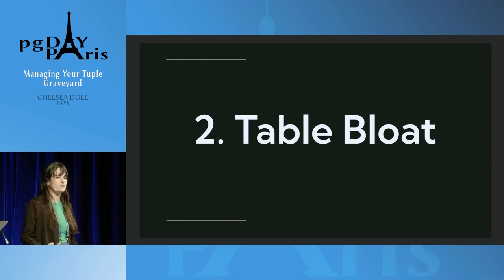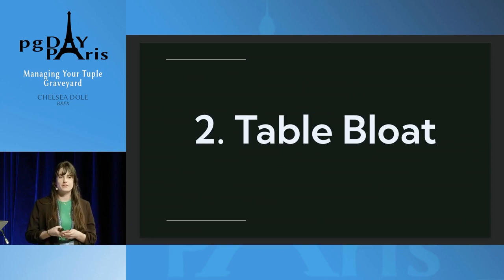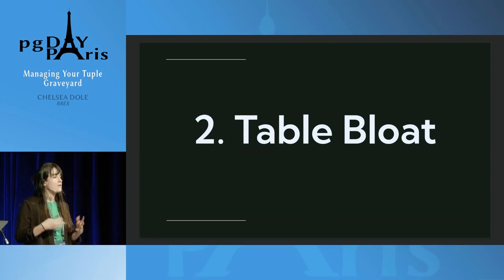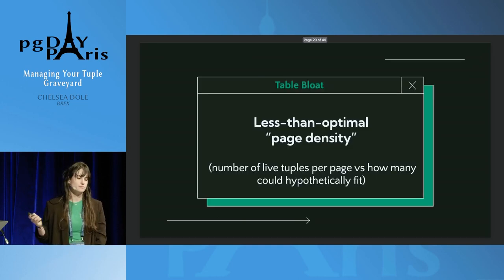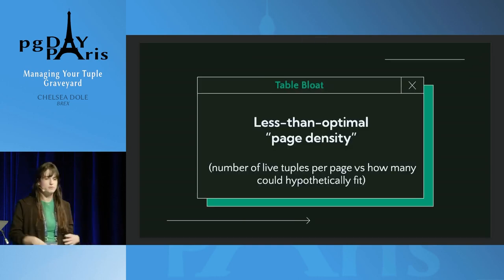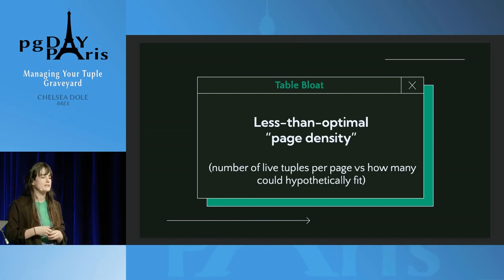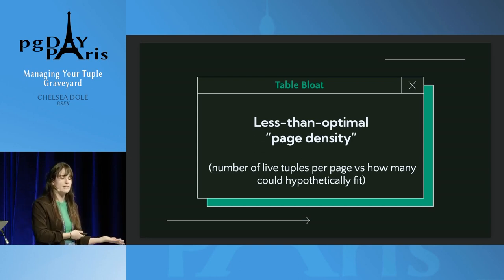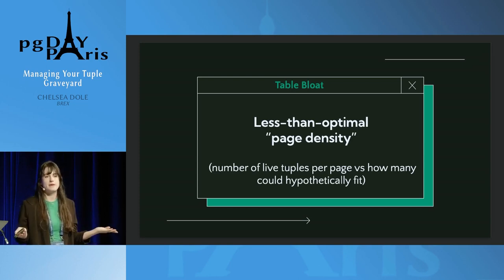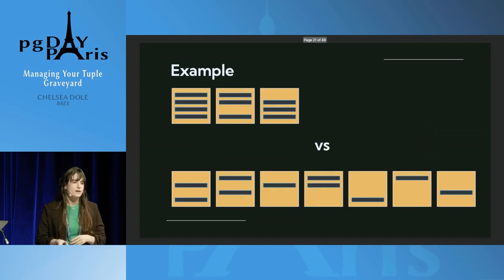Now we've gone through MVCC — which may have been a refresher for those who attended Boris's talk. Now we can get into table bloat, the focus of this talk. Table bloat, to borrow a phrase from PG Analyze, is less than optimal page density — meaning the number of live tuples on a page versus the number that could hypothetically fit is not optimal.